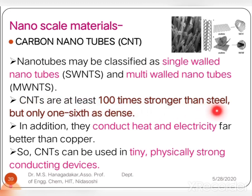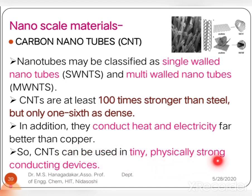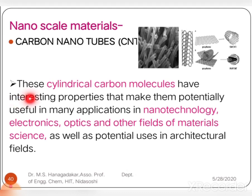Carbon nanotubes are at least 100 times stronger than steel but have only one-sixth the density of steel. In addition, they conduct heat and electricity far better than copper. Carbon nanotubes are very tiny and physically strong, making them useful for conducting devices. These cylindrical carbon molecules have interesting properties that allow their use in nanotechnology, electronics components, optics, and other fields of material science.